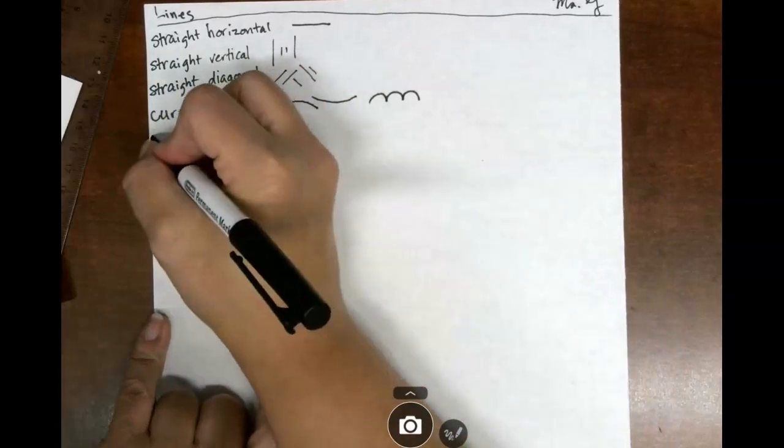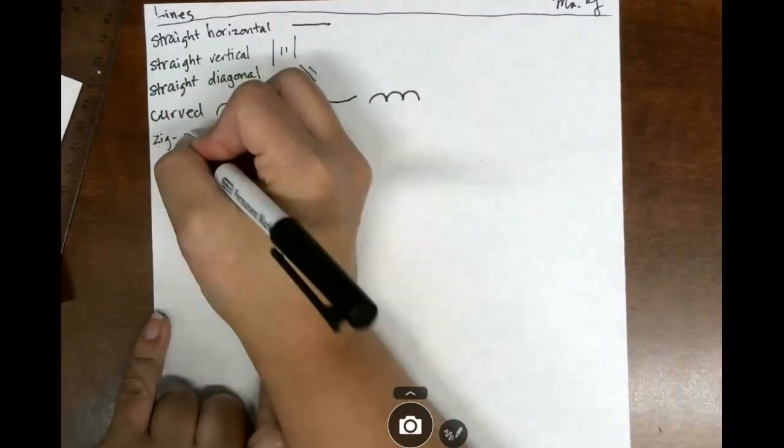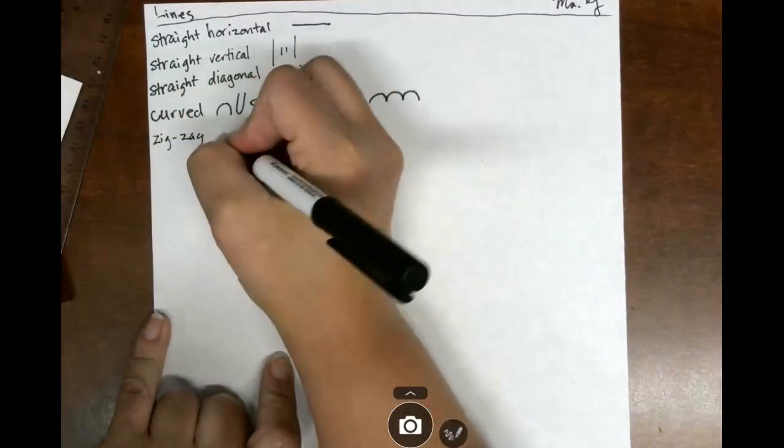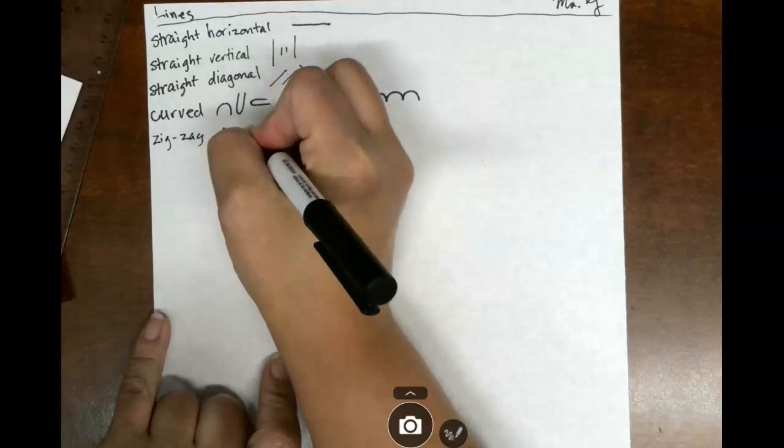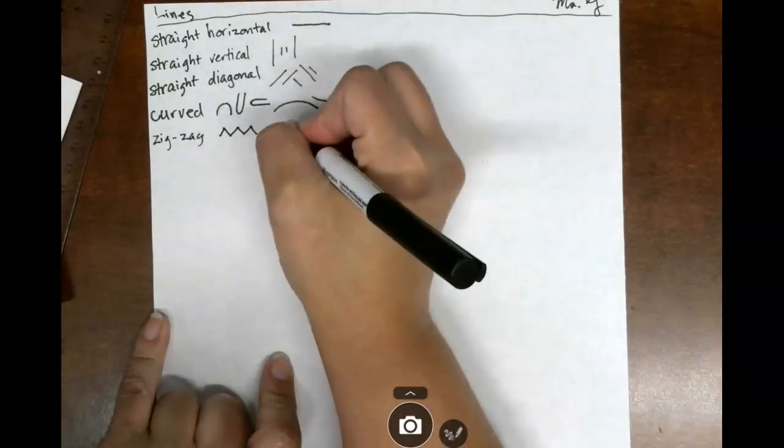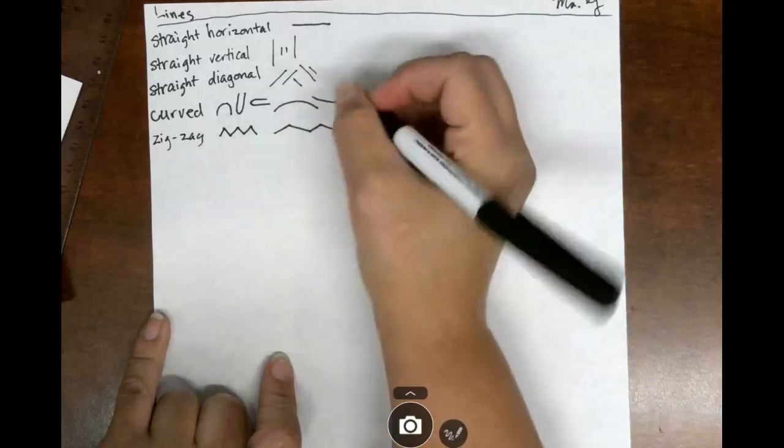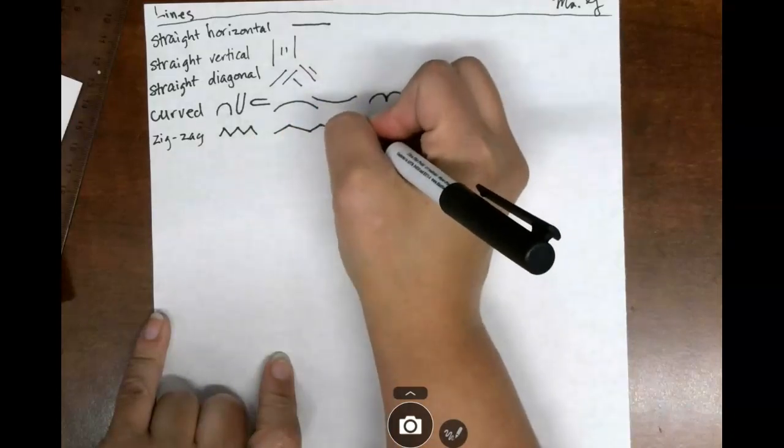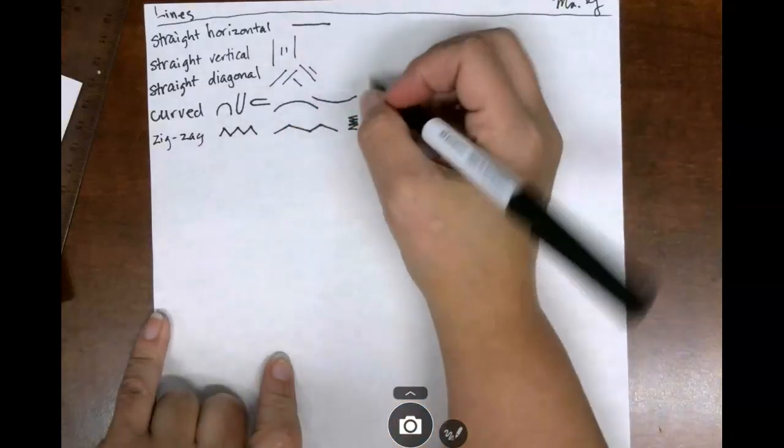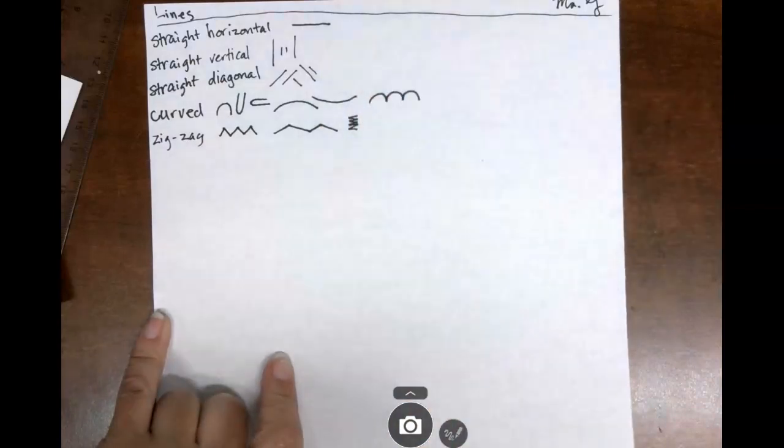Next we have a zigzag, Z-I-G dash Z-A-G. So this is just your zigzag. It can be long and drawn out or be tiny. These are all different examples of a zigzag.